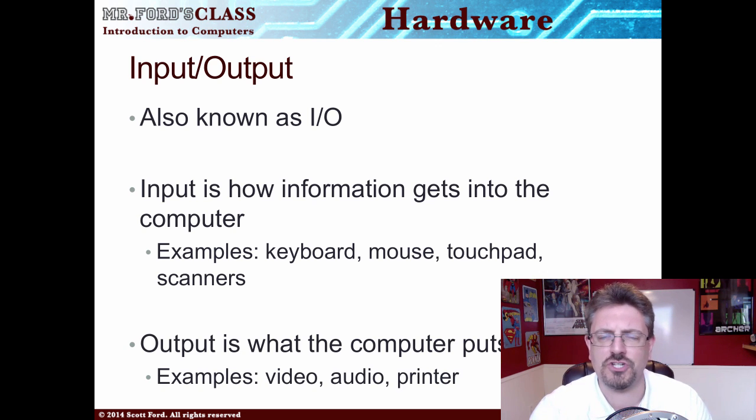Output is getting information out of the device. For example, I'm using a microphone to turn my voice, which is analog, into digital information — it's digitizing it. Those zeros and ones have been put on your computer. You're hearing me and seeing me because the computer then takes those ones and zeros and puts it into a format that our brains can understand.